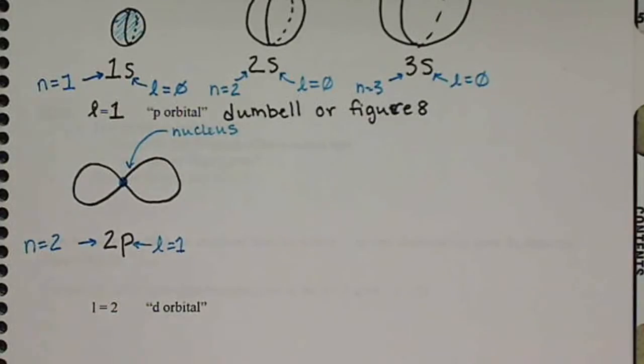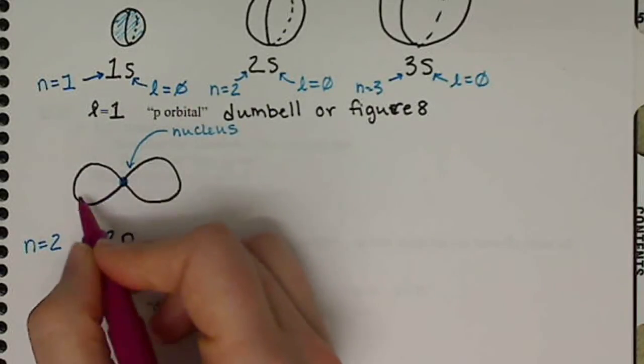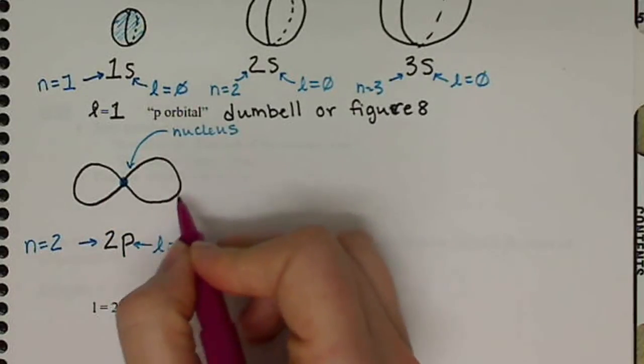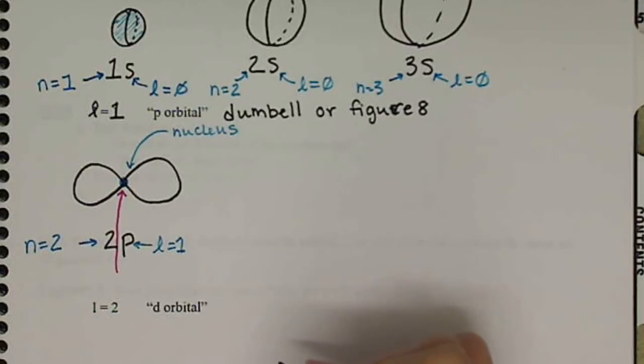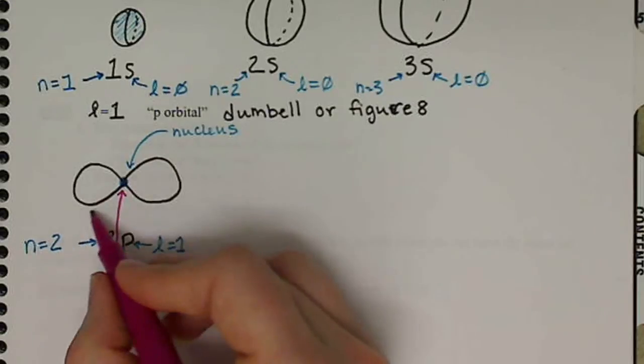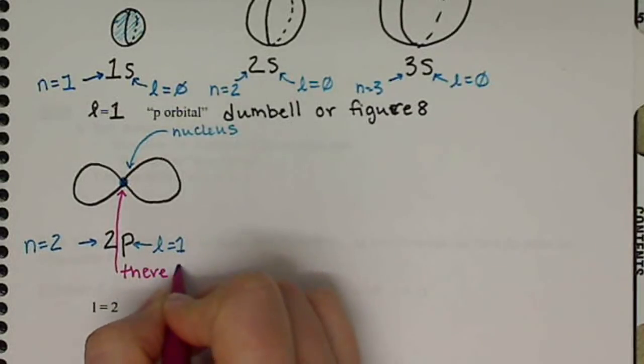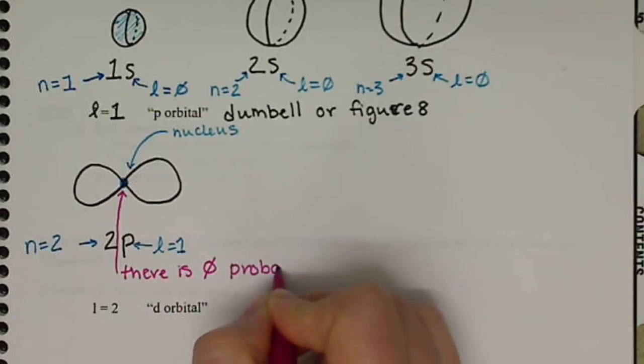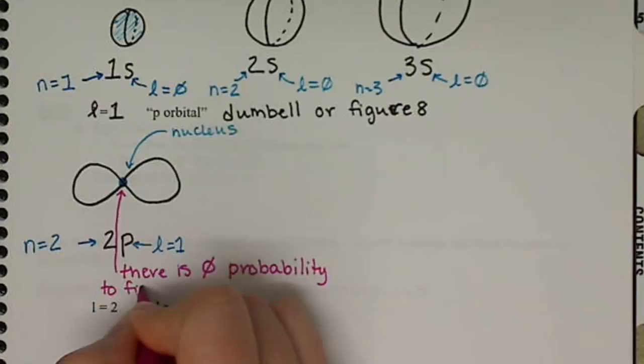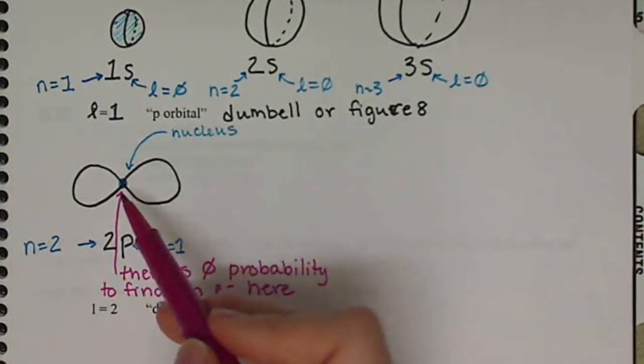What's important about our p orbital is that our electron can exist over on this left-hand side. We can find it here. We can also find it over here on the right-hand side. And remember, these orbitals here are representing our electron density, where we are most likely to find the electron. So the electron can be found in this left-hand side, the electron can be found in the right-hand side, but there is 0 probability of finding the electron directly in between.